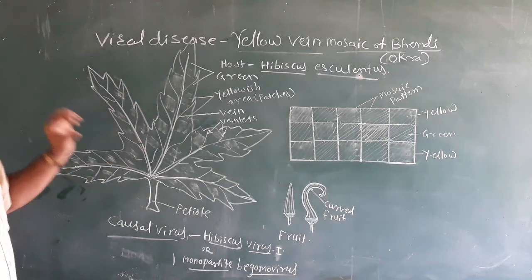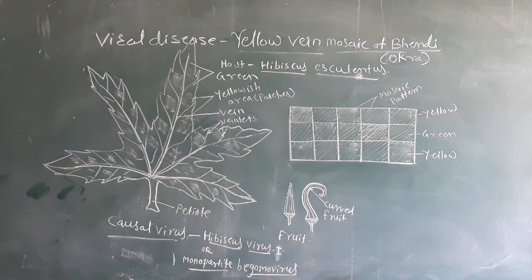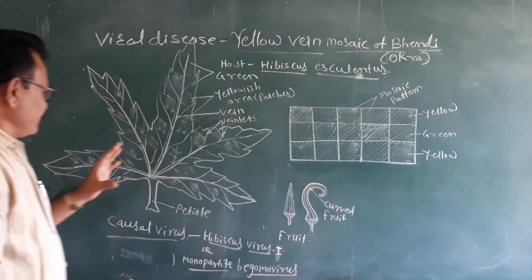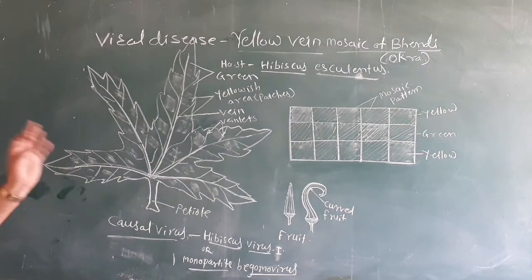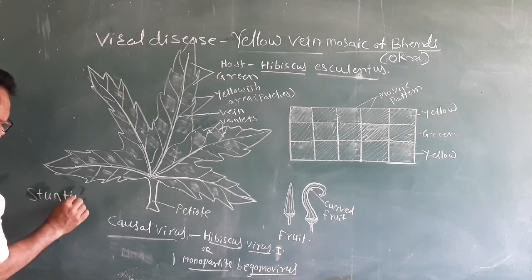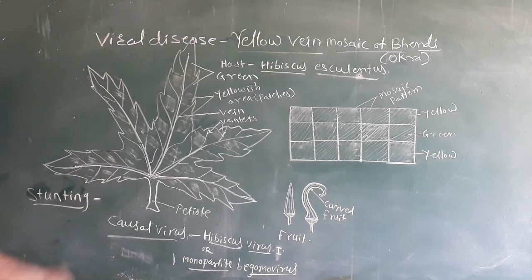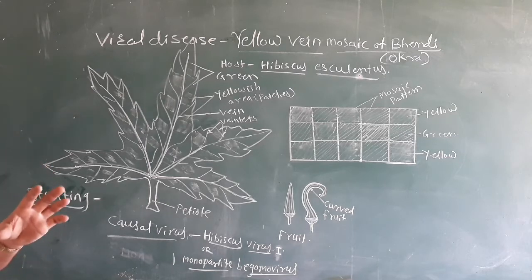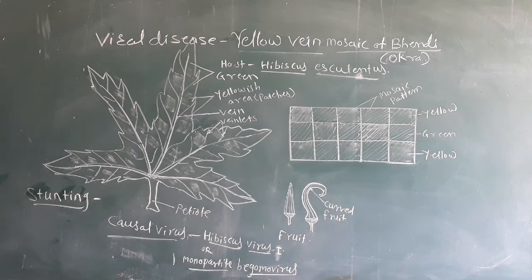The symptoms observed on the infected plants are as follows. The first symptom observed is stunting of the plant. Stunting means reduction in the size of the plant — growth of the plant is arrested or stopped. Stunting of the plants can take place.